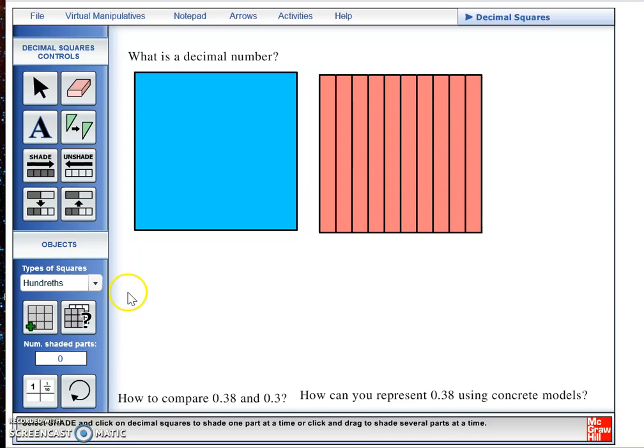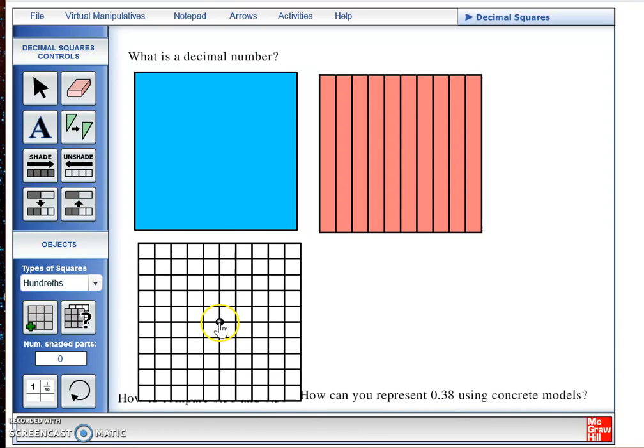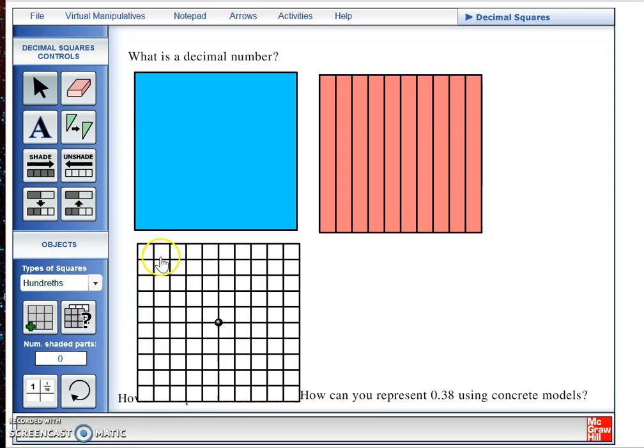And the third type of decimal square is the hundredths square that is partitioned into one hundred equal portions that also, when completely shaded in, represents one whole.